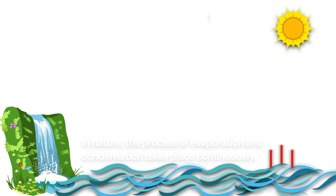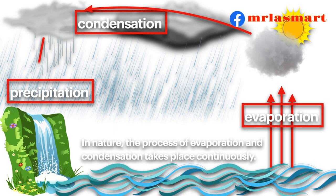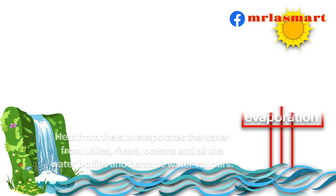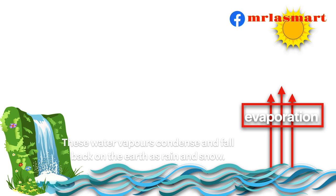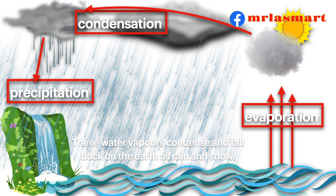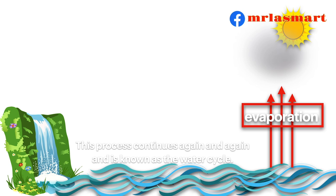In nature, the process of evaporation and condensation takes place continuously. Heat from the sun evaporates the water from lakes, rivers, oceans and all the water bodies and becomes water vapor. These water vapors condense and fall back on the earth as rain and snow. This process continues again and again and is known as the water cycle.